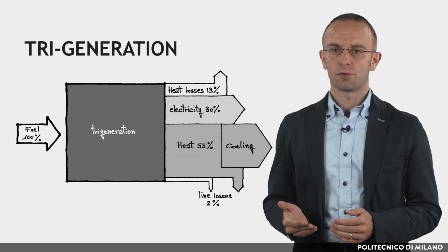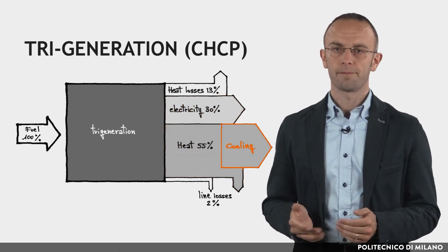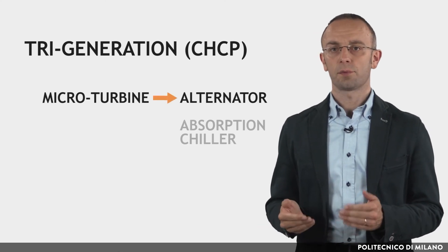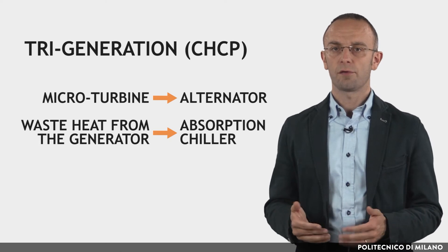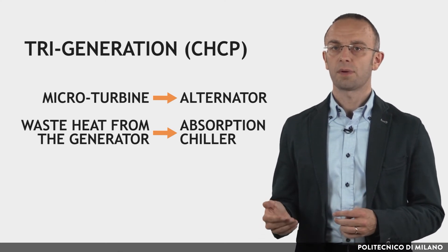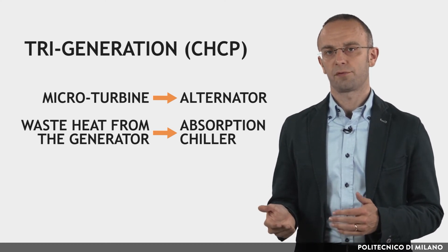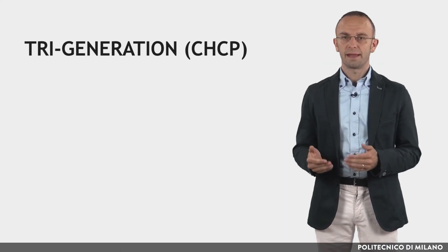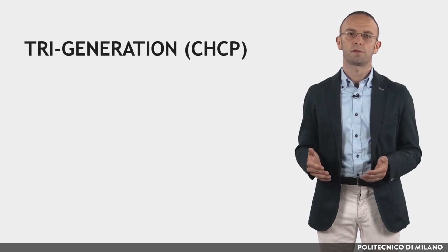With regard to tri-generation, or combined heat, cooling, and power, it refers to the simultaneous generation of electricity, heating, and cooling. The most common technical configuration is made up of a reciprocating engine or a micro-turbine powering an alternator, and an absorption chiller powered by the waste heat from the generator. This system is interesting where there is a constant need for thermal energy — for cooling and for producing domestic hot water — and where availability of electricity from the grid is not always guaranteed. If correctly designed, it can be more efficient in terms of primary energy needs than an air-cooled electric heat pump powered by the grid. The lower the efficiency of the national electricity generation, the more tri-generation systems should be considered in preference to electric chillers.